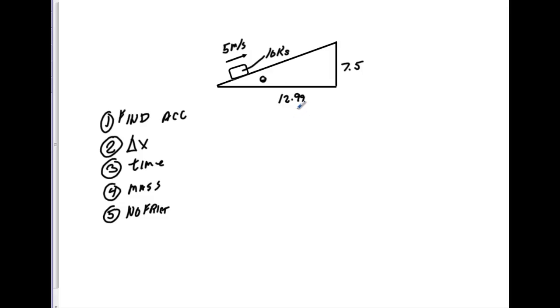Let's look at problem number one. In this problem, we have a mass of 10 kilograms that has an initial velocity of 5 meters per second. It's going up a ramp. The ramp has a rise over run of 7.5 to 12.99.